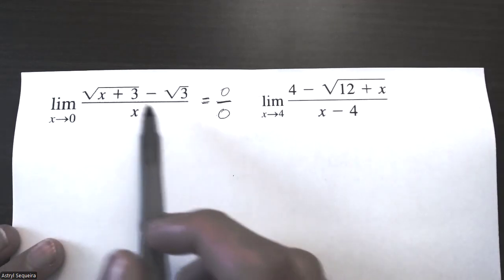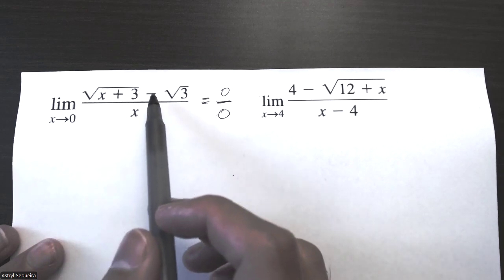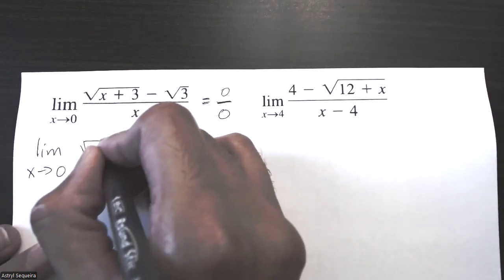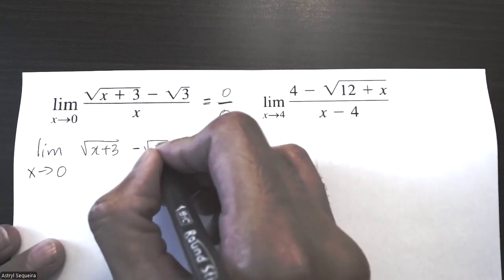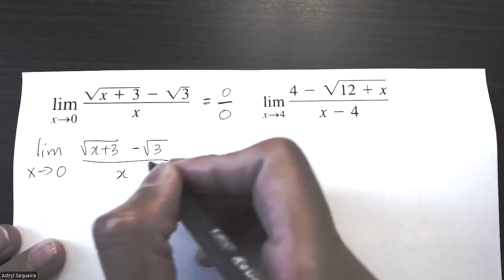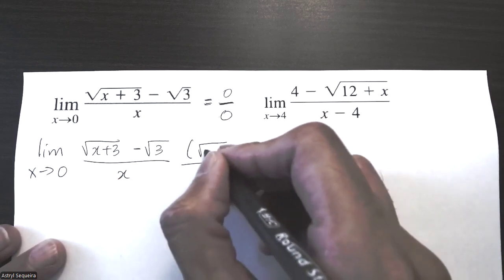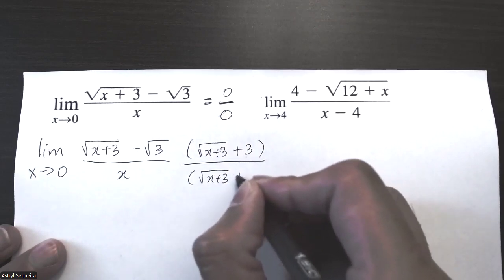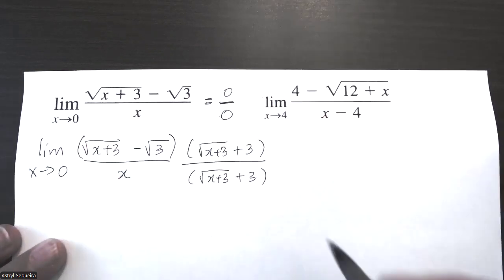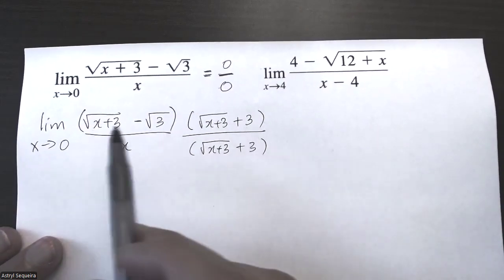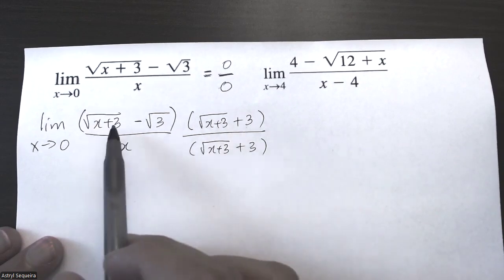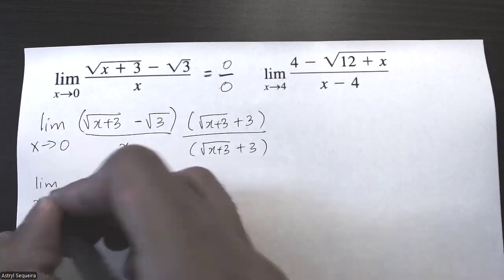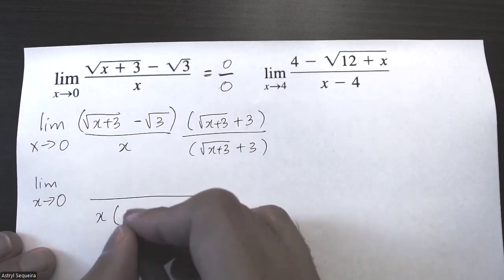In order to rationalize, I need to multiply the top and bottom by the same thing with the square root, but I need to change the sign on the outside. So I'm going to multiply the top and the bottom by root of x plus three plus root three, just changing the sign on the outside. Now we're going to multiply out the part with both radicals in order to rationalize, and then the other part we'll leave in factored form, so I'll just write the bottom the exact same in factored form.